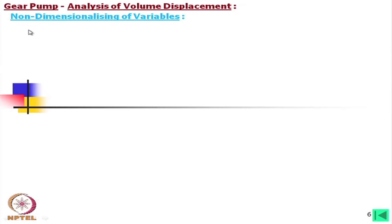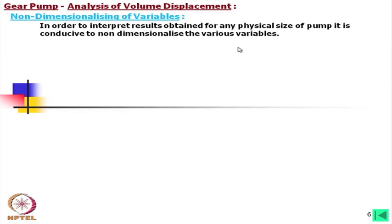Before going into the analysis, we have non-dimensionalized the variables. It is important to understand how we have non-dimensionalized. The benefit is: in order to interpret results obtained for any physical size of pump, it is conducive to non-dimensionalize the various variables. This means that if we know the geometric shape of the teeth and number of teeth — a few parameters that remain constant — then irrespective of the size, we can go for analysis.